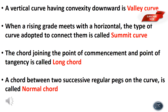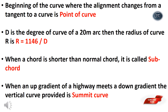The chord joining the point of commencement and the point of tangency is called the long chord. A chord between two successive regular pegs on the curve is called a normal chord. The beginning of the curve, where the alignment changes from a tangent to a curve, is the point of curve. The opposite — where the curve returns to a tangent — is called the point of tangency.